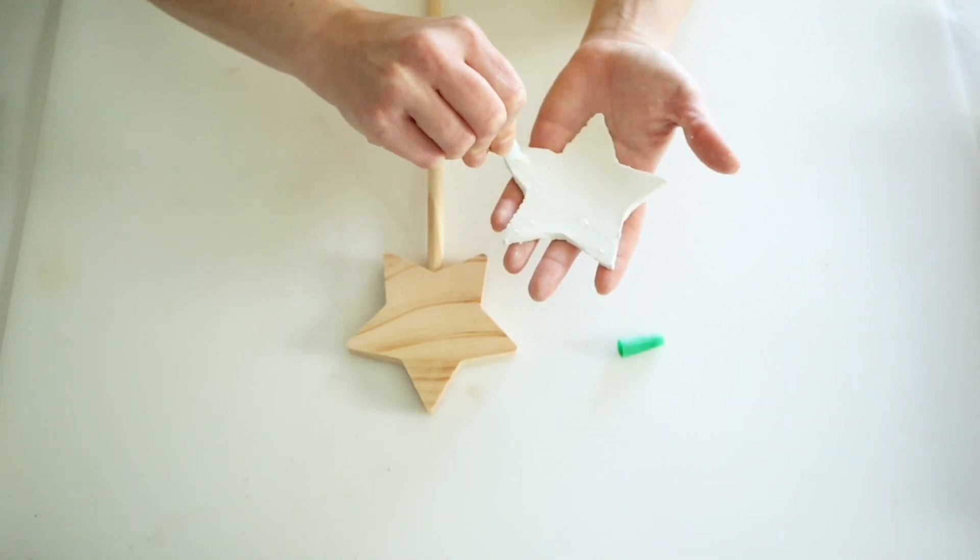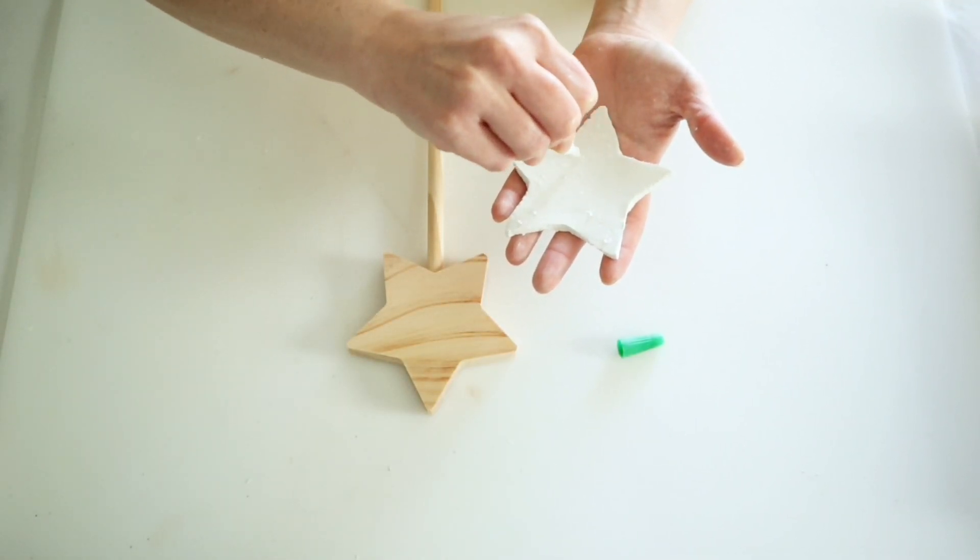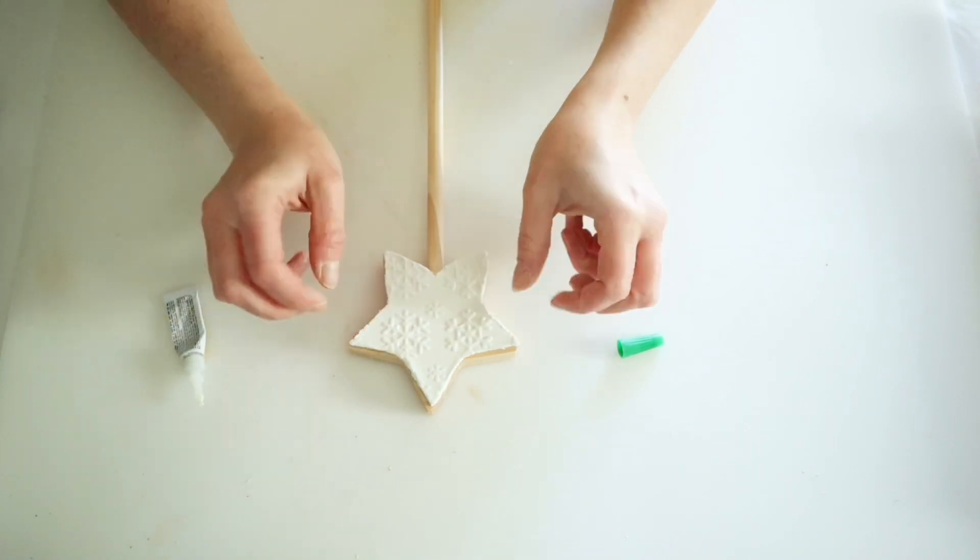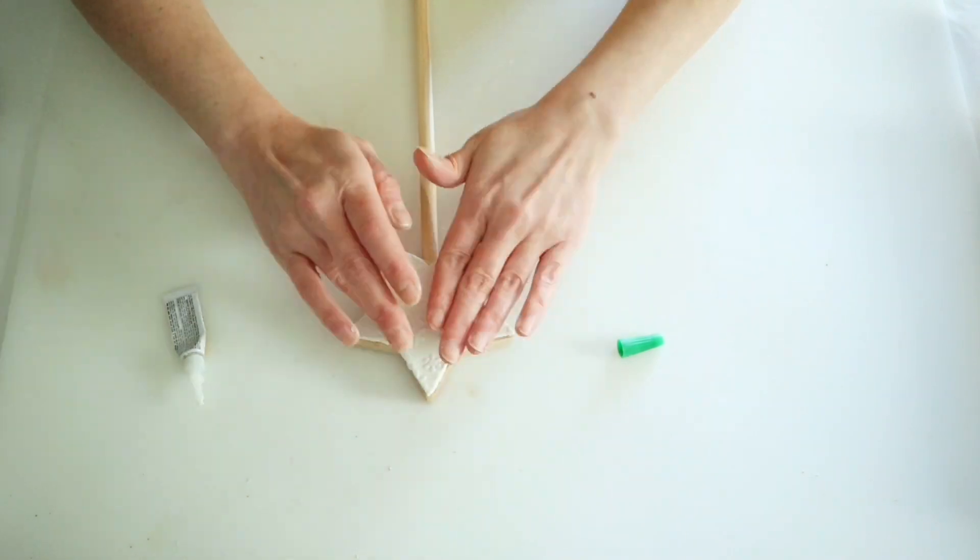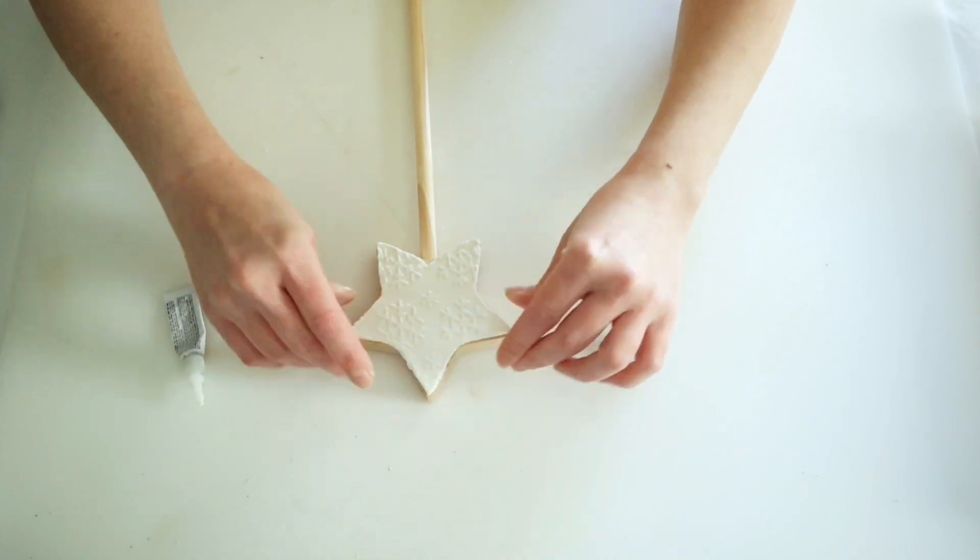Then I'm just going to use some of Dollar Tree's gel super glue to attach the star to that dowel rod and I did go around and kind of shape it and make sure it fit well everywhere and then just pressed in those edges.